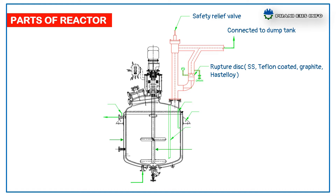Safety relief valve, pressure relief valve, and rupture disc are used for pressure control. In case of high pressure build-up inside reactors due to chemical reactions, the rupture disc is set at a maximum pressure of 1.5 times that of the reactor. There are different types of rupture discs, including SS, Teflon-coated, graphite, and Hastelloy.